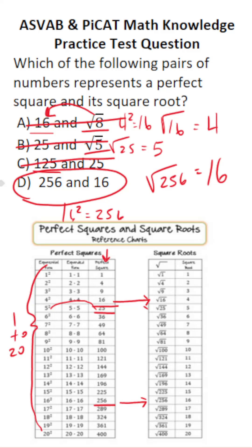256 is a perfect square. Specifically, 16 squared is 256. The square root of 256 is 16.